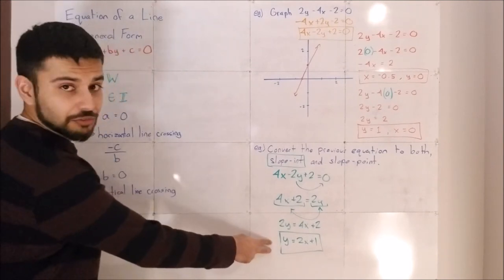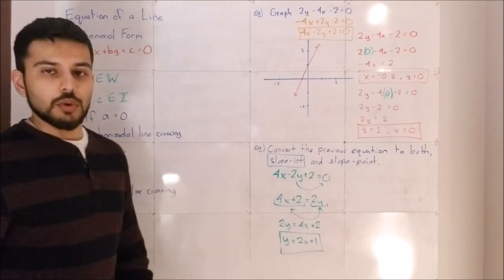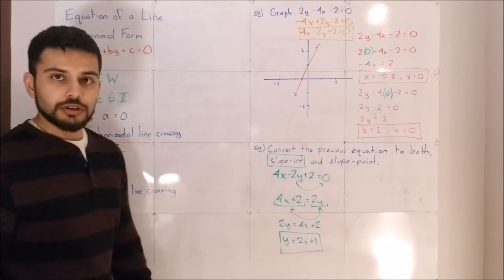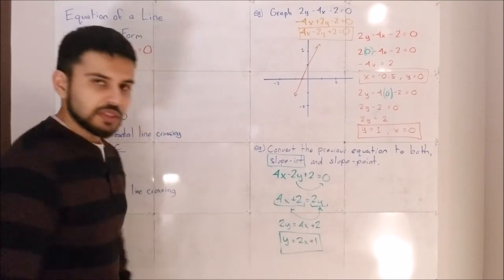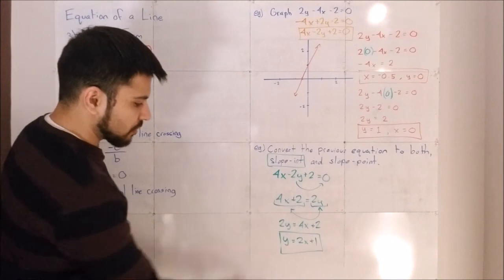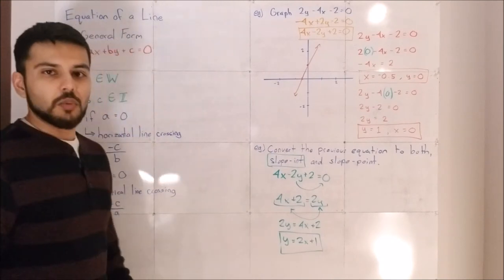If you get to this form, you can graph from this if you wanted to. You end up with the exact same result, right? Remember your b-value at the end should be your y-intercept. Well, it is.